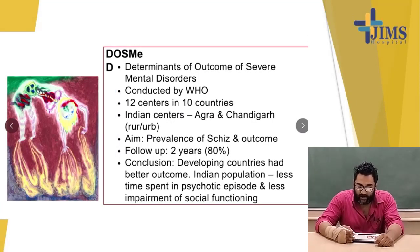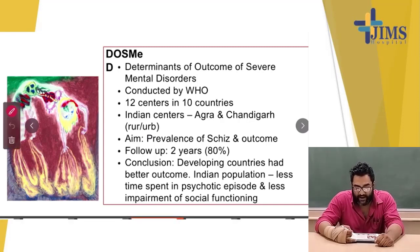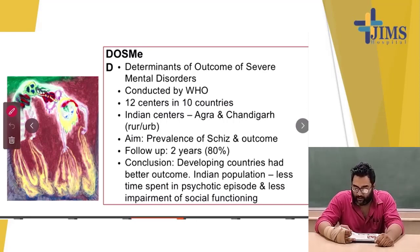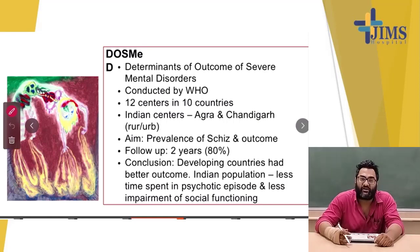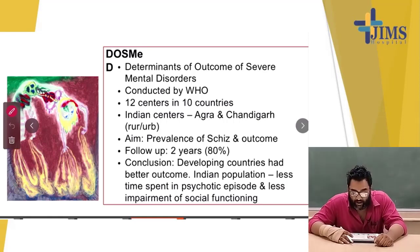In DOS MED — Determinants of Outcome of Severe Mental Disorder — conducted by WHO across 12 centers in 10 countries, the Indian centers were Agra and Chandigarh. The aim was to study the prevalence of schizophrenia and its outcome. Follow-up was done at two years; 80% completed, 20% dropped out. The conclusion was that developing countries had better outcomes, with the Indian population spending less time in psychotic episodes and showing less impairment of social functioning.